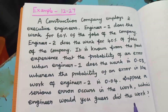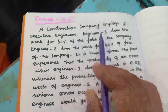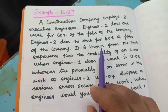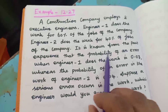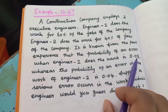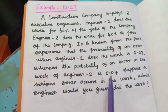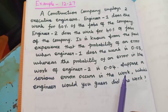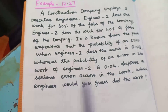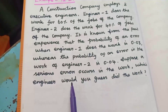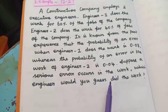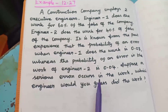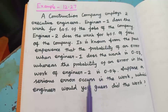Students, can you understand the question? We have two engineers. Work done by engineer 1 is 60% and by engineer 2 is 40%. From past experience, the probability of an error by engineer 1 is 3%, that is 0.03, and by engineer 2 is 4%, that is 0.04. Suppose a serious error occurs — which engineer would you guess did the work? For this case, we can apply Bayes' theorem to identify which engineer made the error.